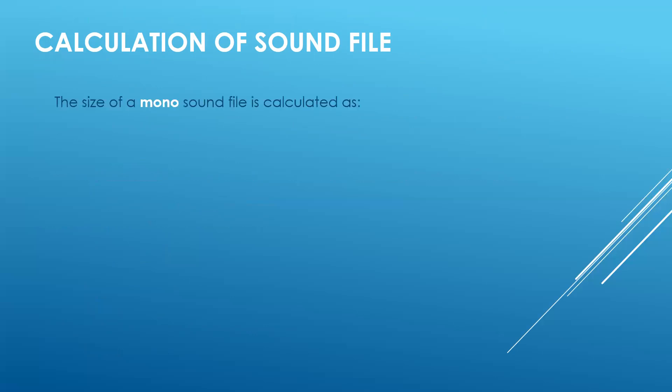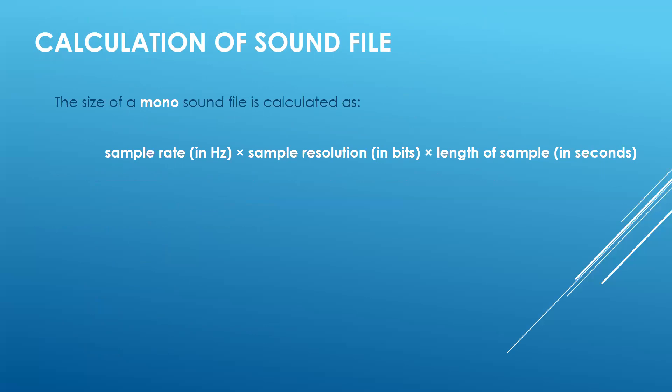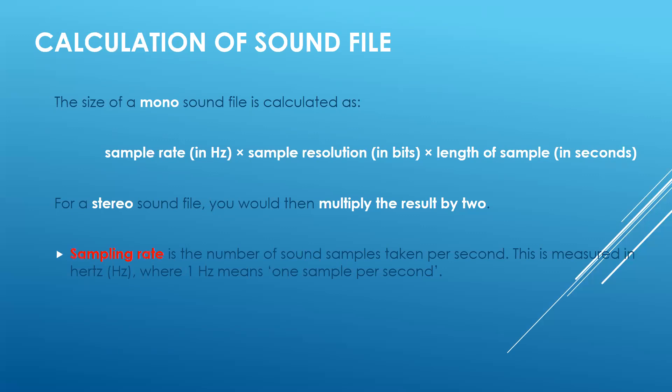Now for calculating sound file size. The formula for a mono sound file is: sample rate (Hz) × sample resolution (bits) × length of sample (seconds). For stereo, multiply the result by two. The sampling rate is the number of sound samples taken per second, measured in hertz — one hertz means one sample per second. Sampling resolution, also called bit depth, is the number of bits per sample.